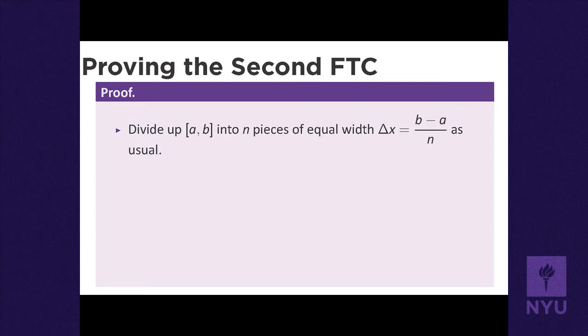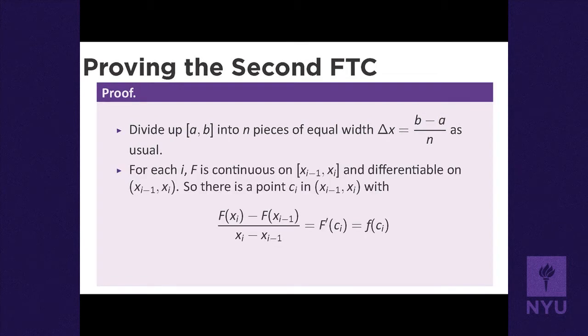To show this, I'll compute a Riemann sum in a very special way. I divide the interval a to b into n pieces, each of width Δx = (b - a)/n. On each interval, I need to pick a point cᵢ satisfying: [F(xᵢ) - F(xᵢ₋₁)] / (xᵢ - xᵢ₋₁) = F'(cᵢ) = f(cᵢ).